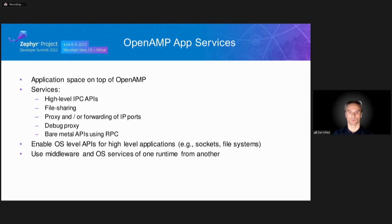Most of this work was performed within the OpenAMP application services working group. This group covers the application space that sits on top of OpenAMP and describes high-level services for IPC, debugging, file sharing, and more. Our goals are to create middleware which will enable the use of services from one runtime from the other, and to enable OS-level APIs like sockets or file systems for OpenAMP applications.